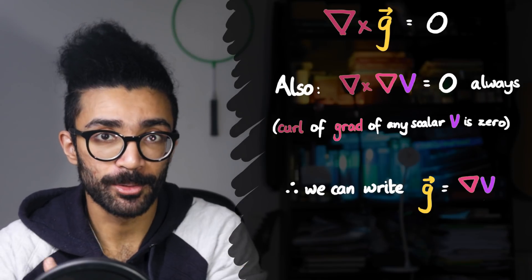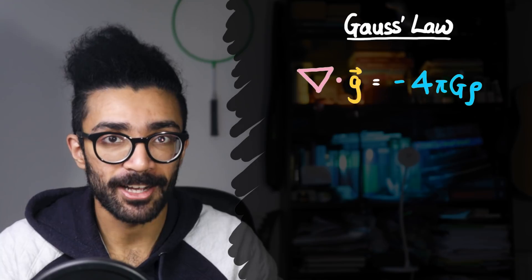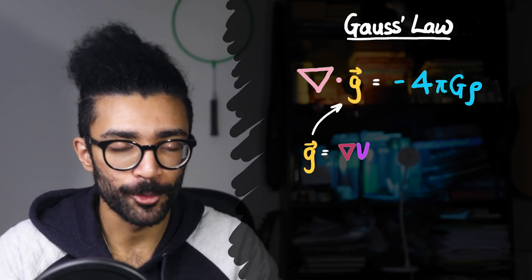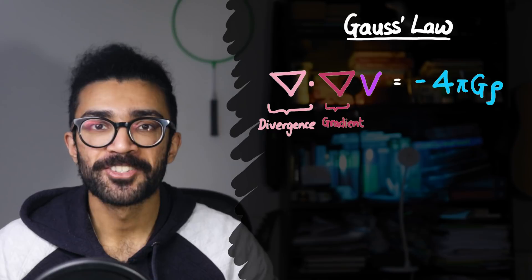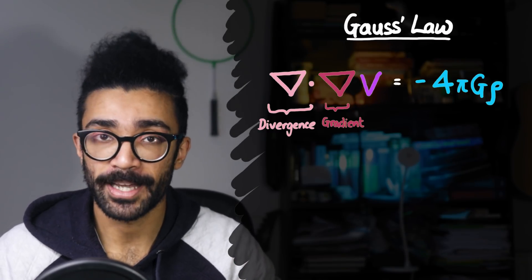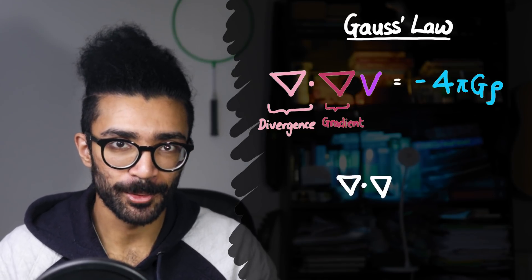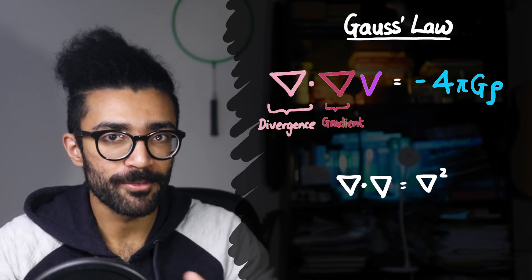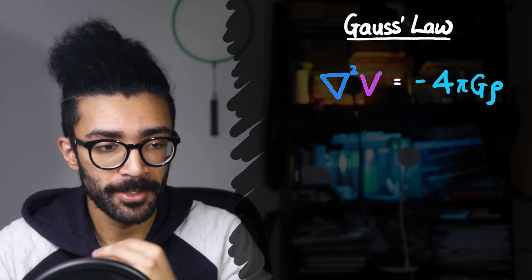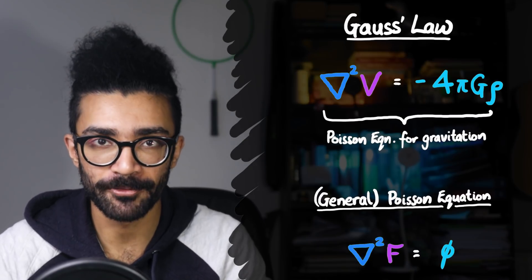We can write that G is equal to grad V, where V is a scalar field, at which point we can go back to Gauss's law and substitute in grad V for the gravitational field G. And so now what we have on the left-hand side is the divergence of the gradient of some scalar field V. But also, remember that del dot del is equal to del squared. And so we've arrived at the Poisson equation for gravitation. This is a specific use of the general Poisson's equation we saw earlier in the video. We arrived here by starting with Gauss's law and then remembering that gravity is a conservative force field.